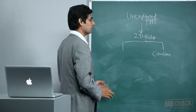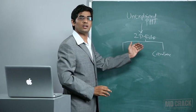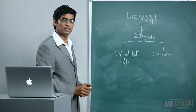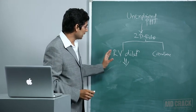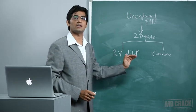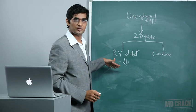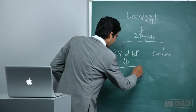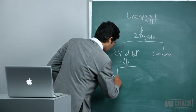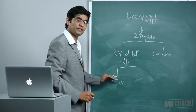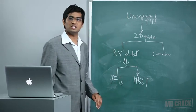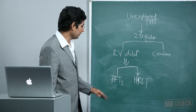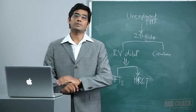When 2D echo shows no obvious cardiac cause but reveals right ventricular dilatation, you may suspect cor pulmonale — increased right ventricular pressure due to underlying respiratory disease. Respiratory diseases can be divided into obstructive or restrictive types. For suspected obstructive disease, the investigation of choice is pulmonary function testing (PFT).